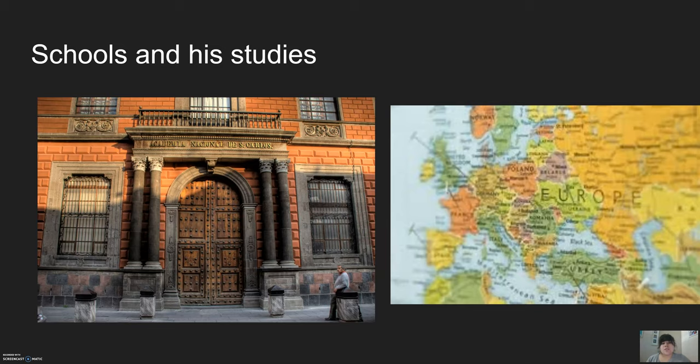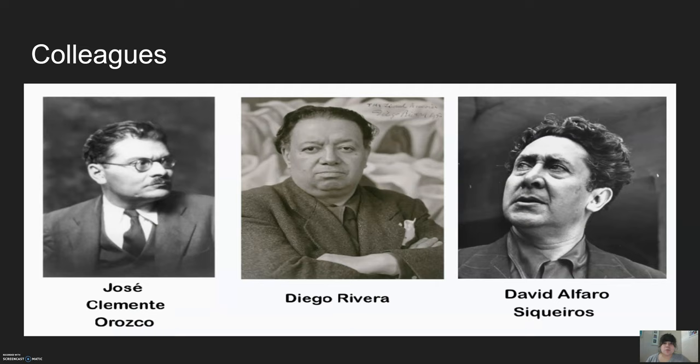At the age of 10, he was given a scholarship by the government to study at the Academy of San Carlos in Mexico. Then he was given a grant to go study in Europe. From Europe, he went to Spain and then to Paris, where he picked up Cubism techniques and Impressionism, but then he eventually returned back to Mexico.